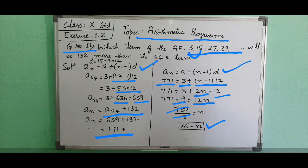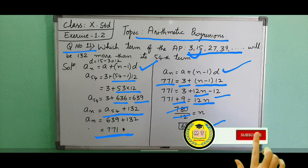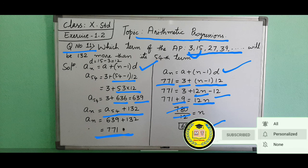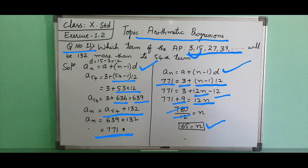So what does it mean? The 65th term of the AP is 771, which is 132 more than the 54th term. Hope you have understood this question. If you are having any doubt, you can ask in the comment section. Thank you.